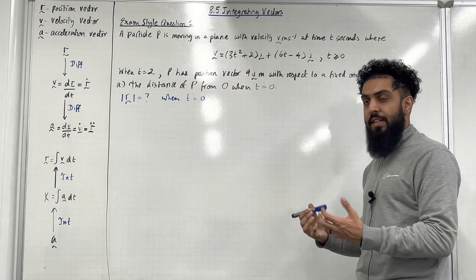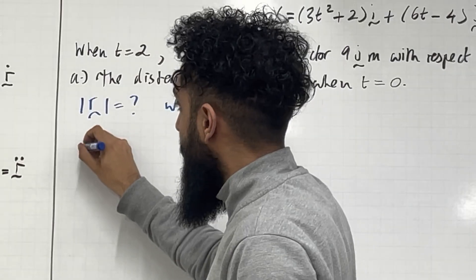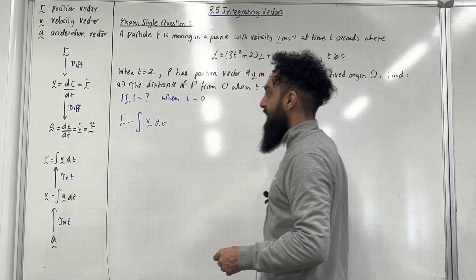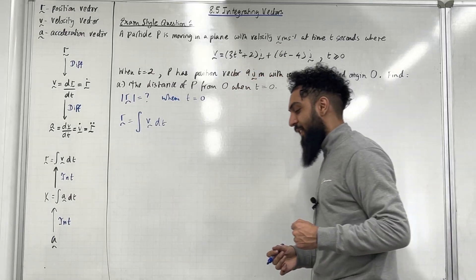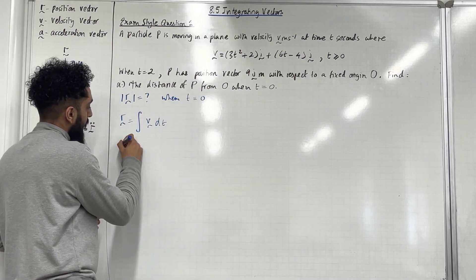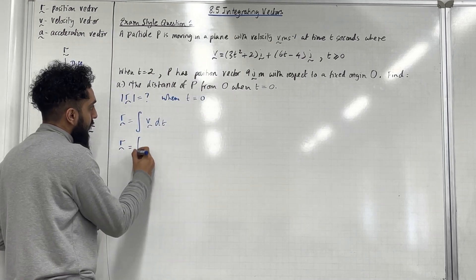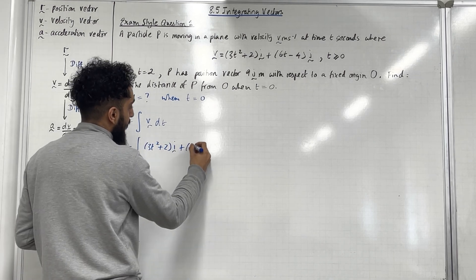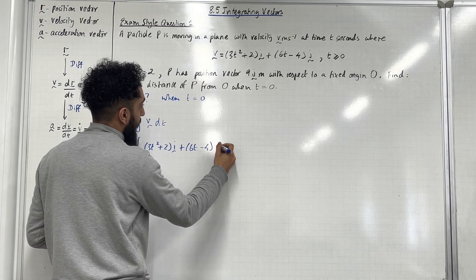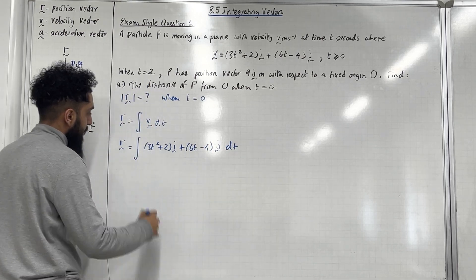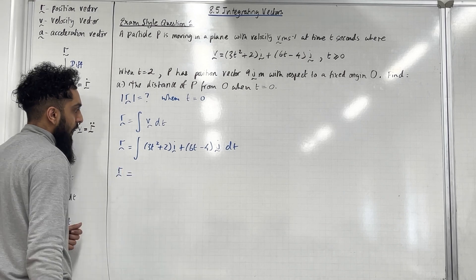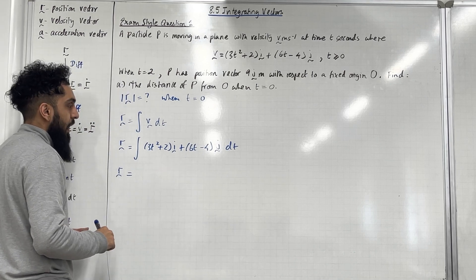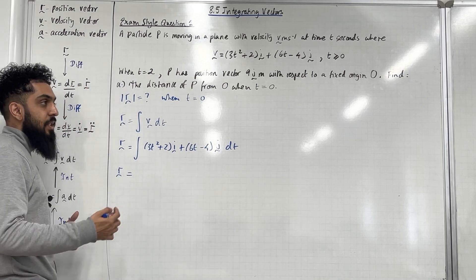We know that the distance is the magnitude of the position vector, so we are trying to work out the magnitude of the position vector when T is equal to 0. To find the position vector, we have to integrate the velocity vector with respect to T. We are going to use the integration technique from year 1: add 1 to the power, divide by the new power. That is the technique used to integrate polynomials.